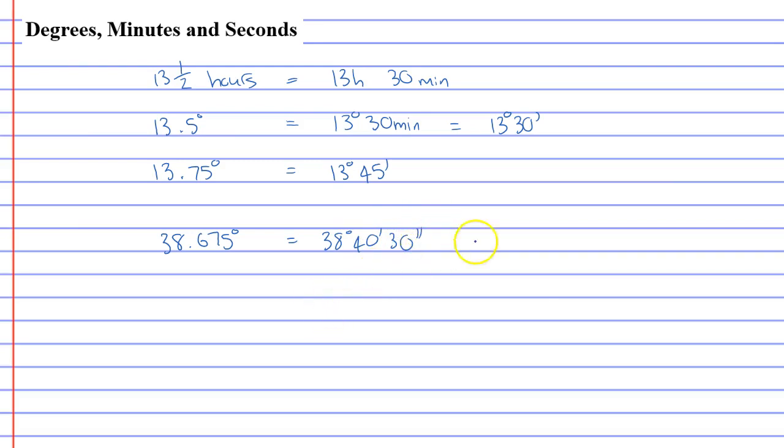Now, you noticed on the calculator we just used, it did this using a DMS button. Different calculators have different buttons. And I just want to mention that sometimes your calculator has a degrees symbol with the three apostrophes after it. So these are usually the two buttons that you see when you are converting between degrees, minutes, and seconds, and decimals.